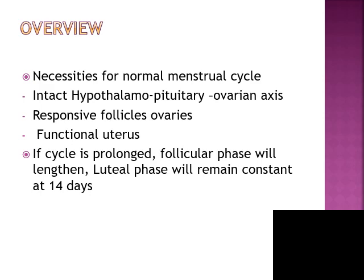We need responsive follicles in the ovaries and a functional uterus. If any of these is absent — for example, sometimes there is abnormality in the development of the uterus and a person is born without a uterus — in such cases there will not be an onset of the menstrual cycle.